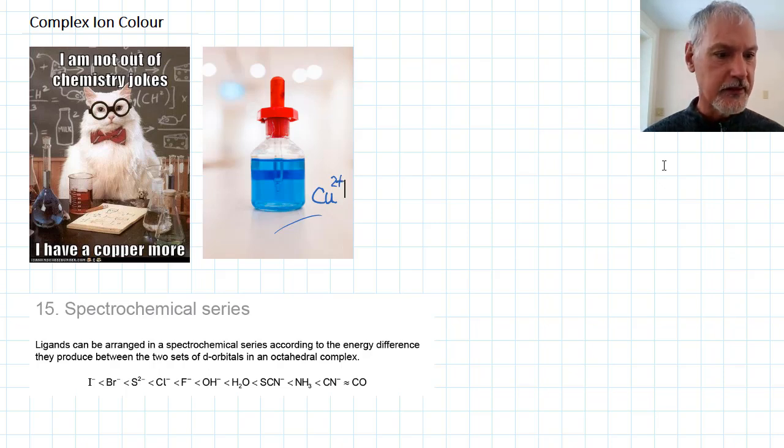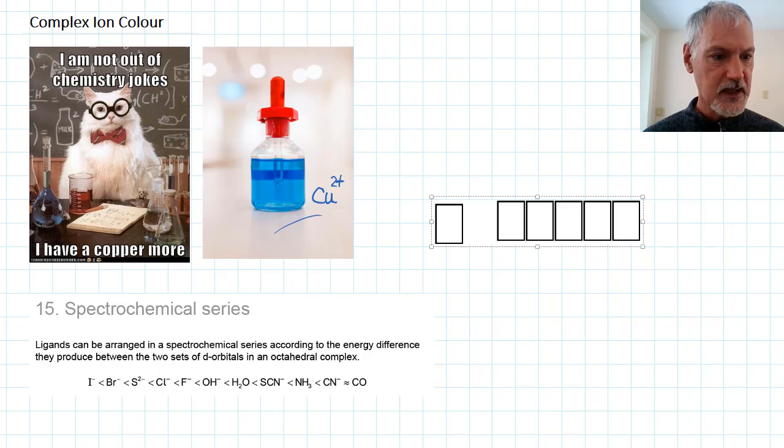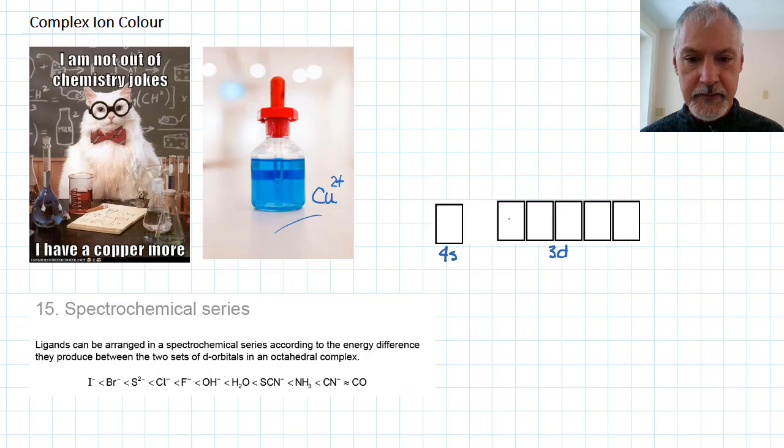Let's begin by looking at its electron configuration at the highest energy level in particular. So you might recall this is the 4s and the 3d. In the copper 2+ ion, this orbital has been vacated, and I have 9 electrons located in the 3d.